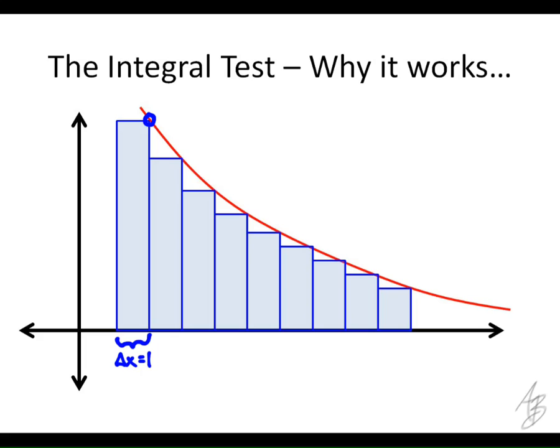So let's say that this is like, say x equals 2 right here. Then this right here is going to be f of 2. And this right here is going to be f of 3. And this right here is going to be f of 4. And so this Riemann sum approximation is going to be really just the sum of the series. Does that make sense?